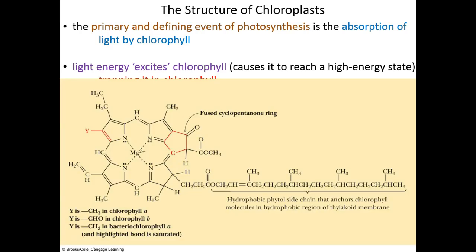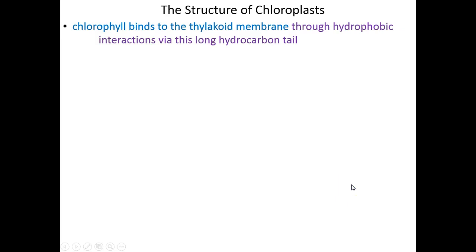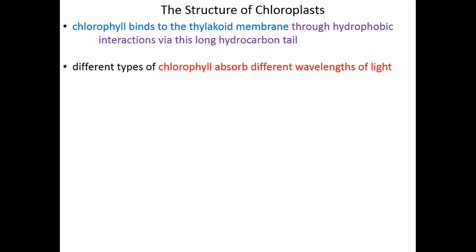Chlorophyll as a molecule has a very long hydrophobic chain. For those familiar with the structure of heme — coordinated within hemoglobin — heme and chlorophyll look very similar. Heme has a coordinated iron in the center; here we see magnesium. But the overall shapes are very similar. However, heme does not have this long hydrophobic tail. This long hydrophobic tail of chlorophyll allows it to embed within the thylakoid membrane directly, making favorable hydrophobic interactions with the membrane lipids.